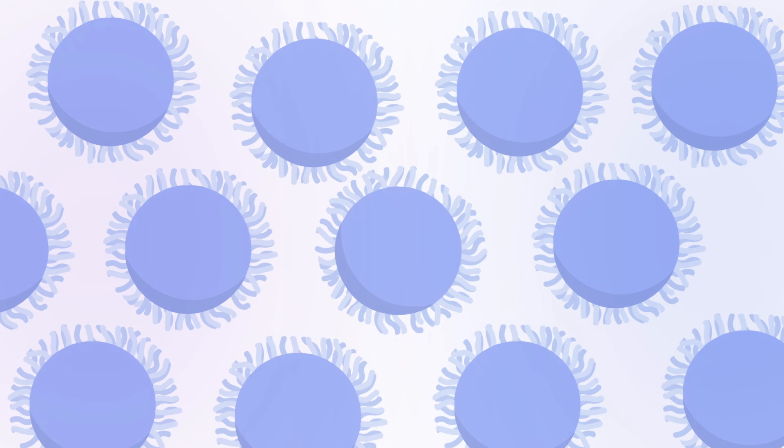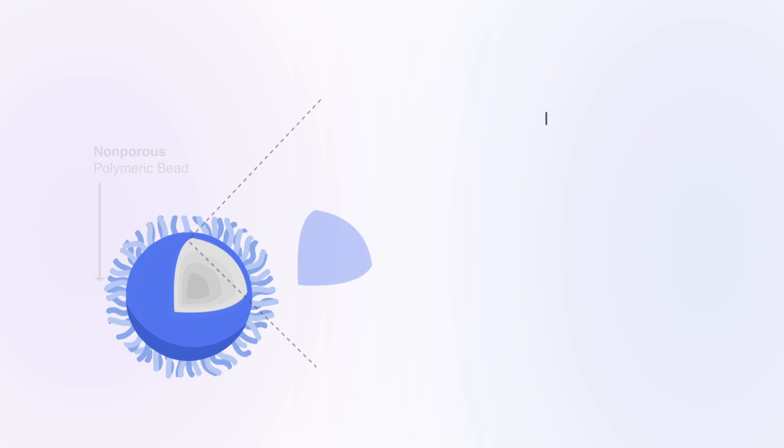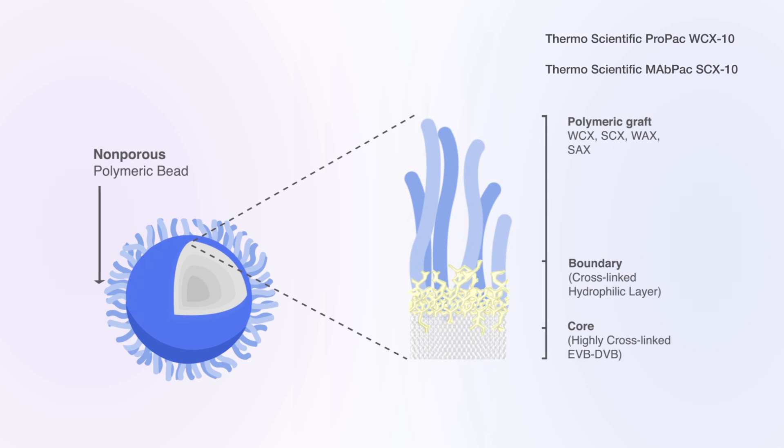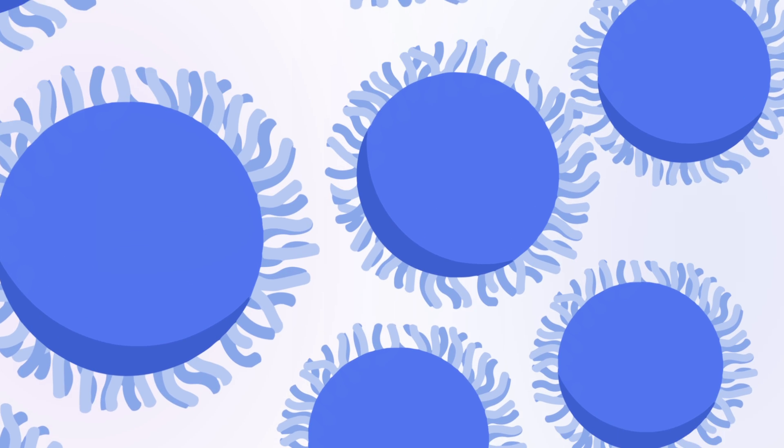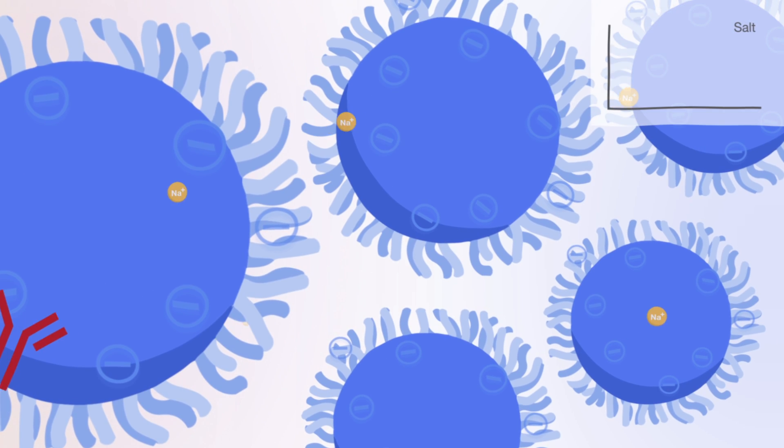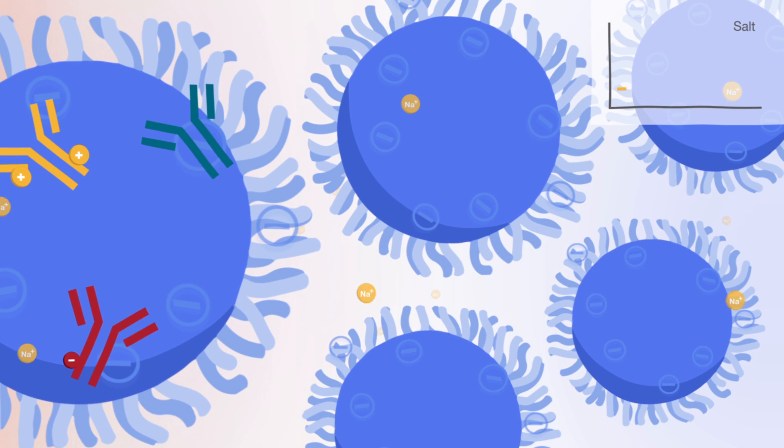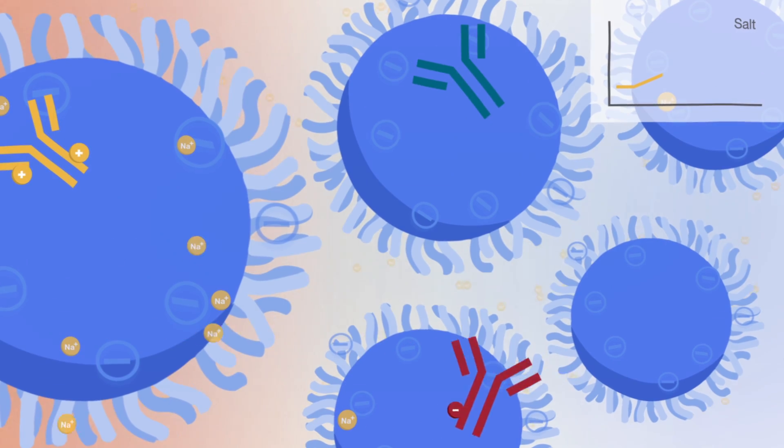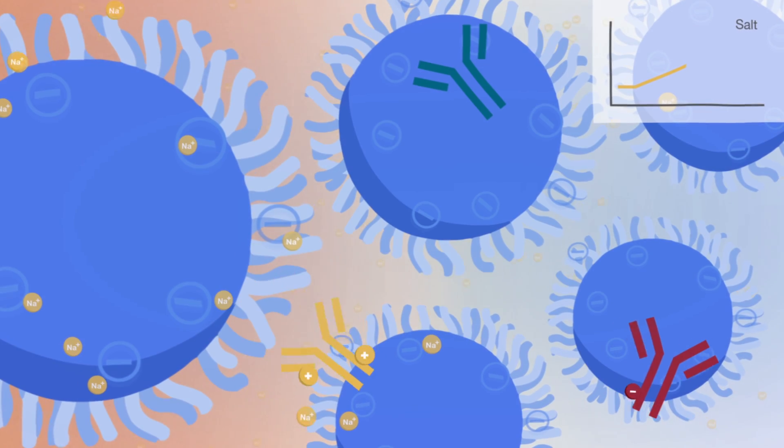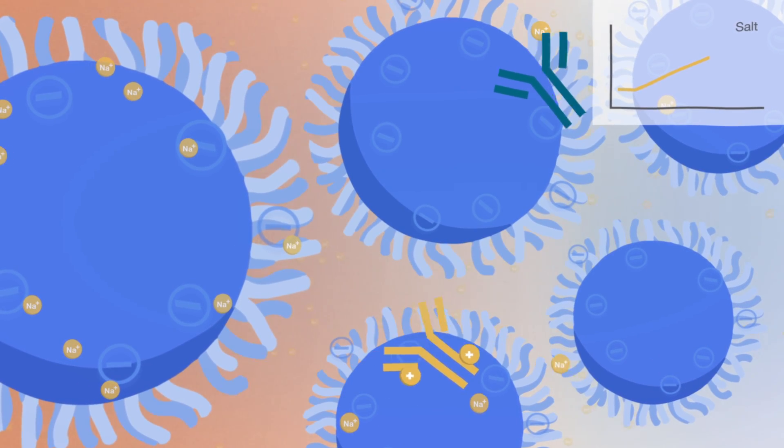The columns are packed with polymeric beads grafted with stationary phase chains which interact with charged molecules. The protein continually competes with salt for access to charged sites on the stationary phase. As the salt concentration increases, proteins are displaced and move through the column, releasing and rebinding along the way.